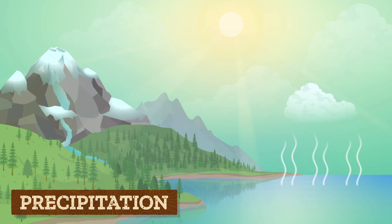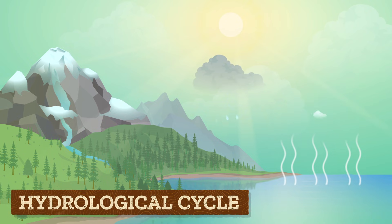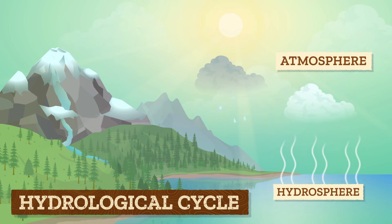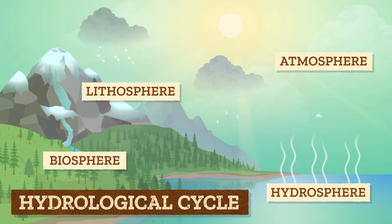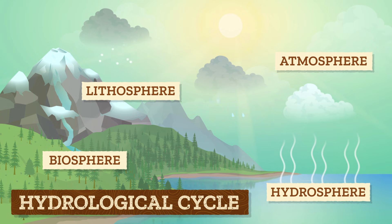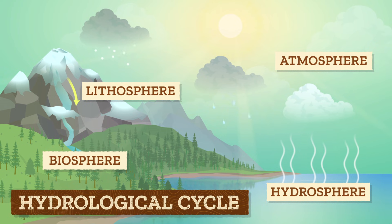We can think of precipitation as the final flourish in the hydrological cycle that circulates water molecules between the four Earth systems. It's all the rain, snow, sleet, hail, or any liquid or solid that falls from clouds in the atmosphere.